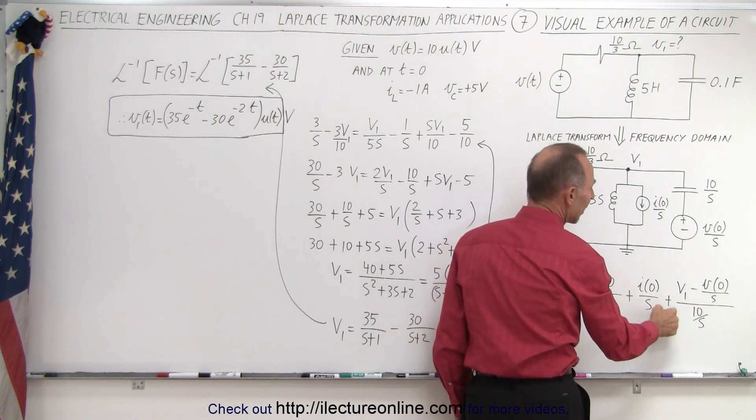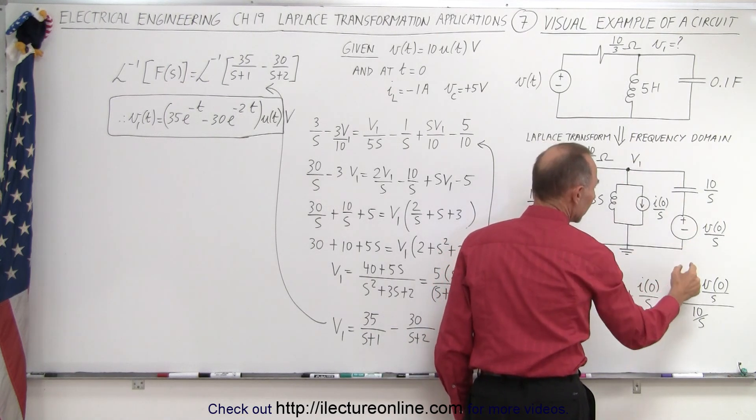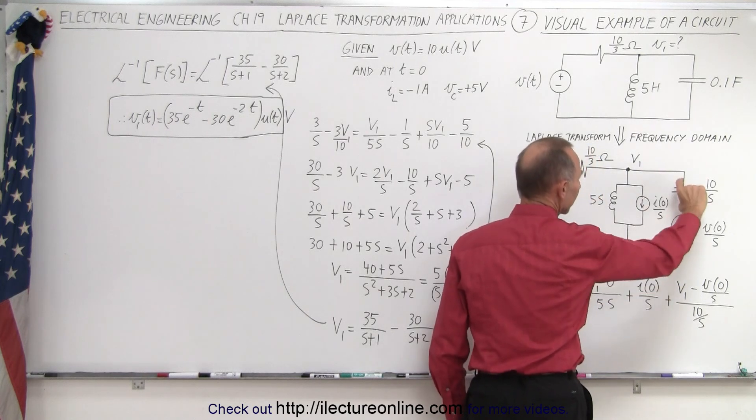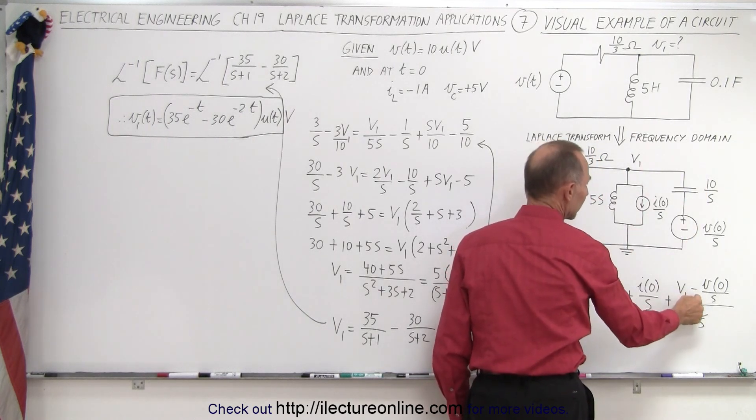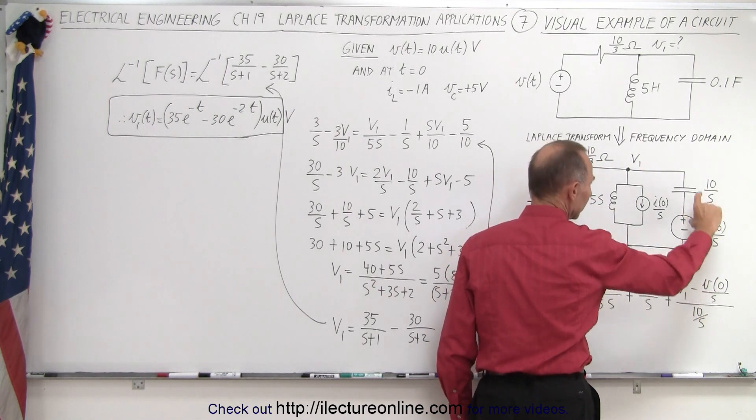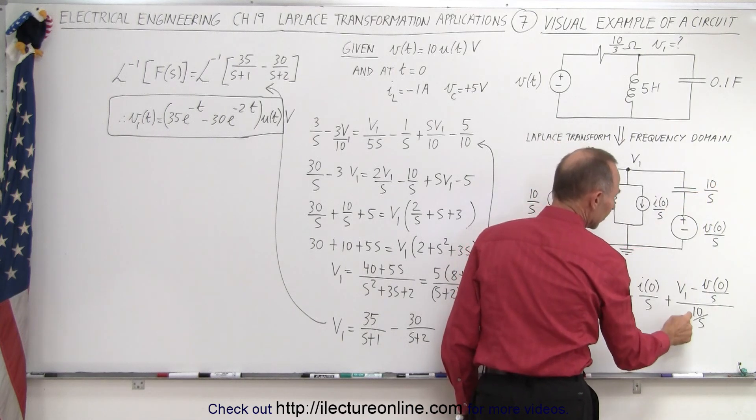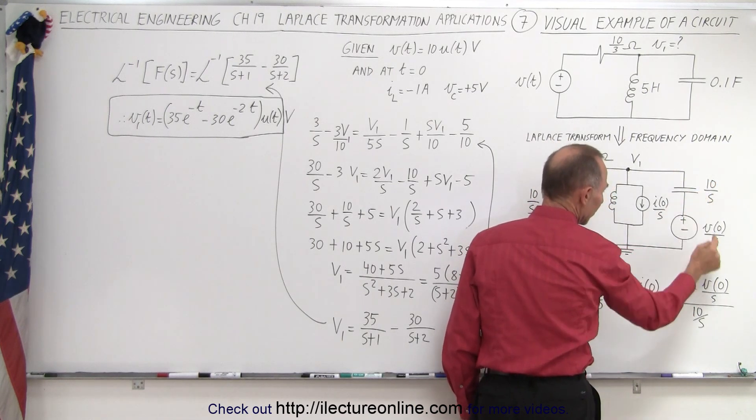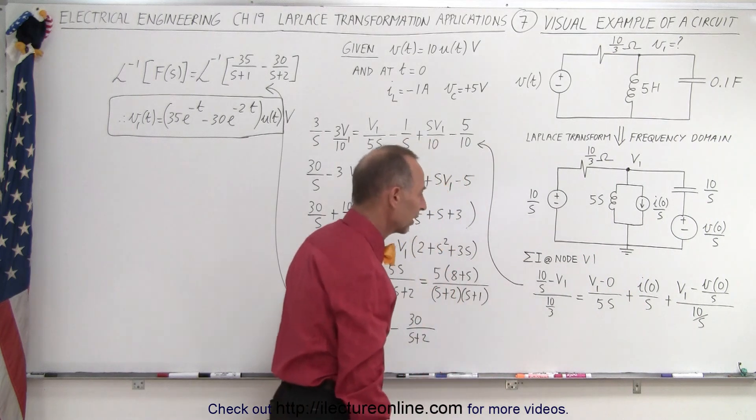Then here we have the voltage difference from here to here, because we want to be across the capacitor. So it's V1 minus the voltage across the capacitor. That difference divided by the capacitor reactance in the frequency domain, 10/S.